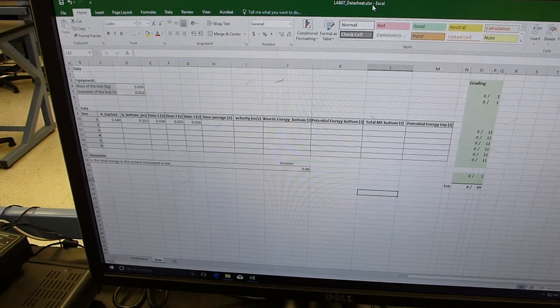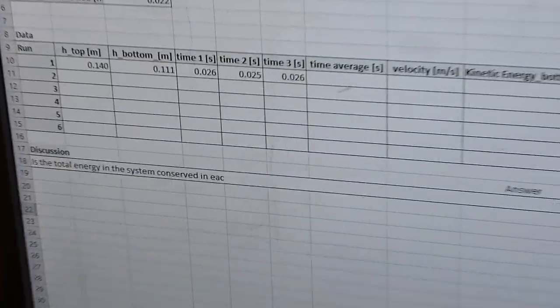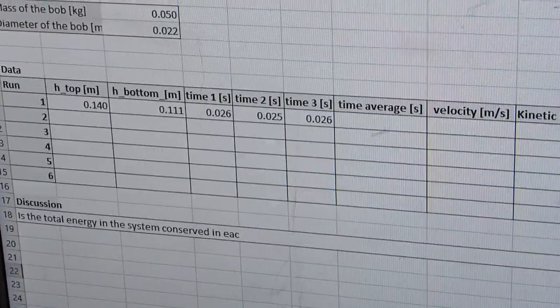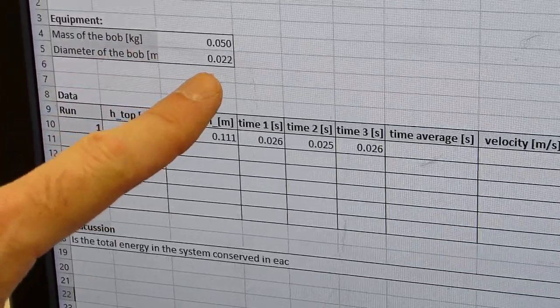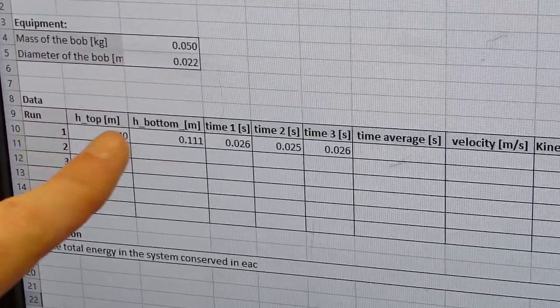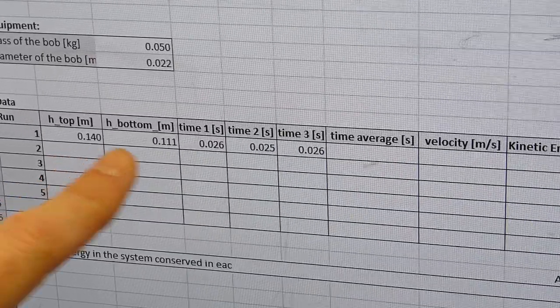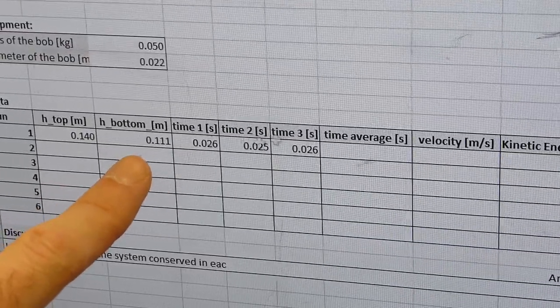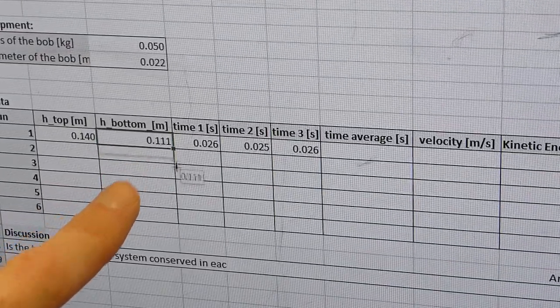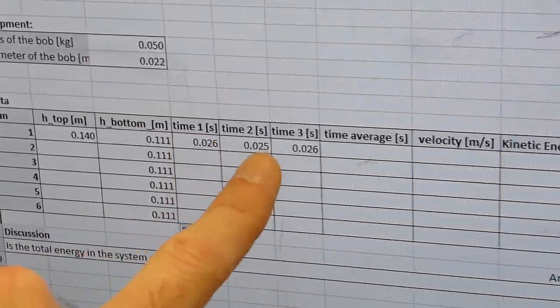Now it's time to do the animation. So you start by putting your data in your Excel sheet, put the mass of the bob, its diameter, then for each run you put the height from where you released it, the lowest height of the bob, which is actually going to be the same for all the runs if you don't change your pendulum setup, and then the 3 times you measured.